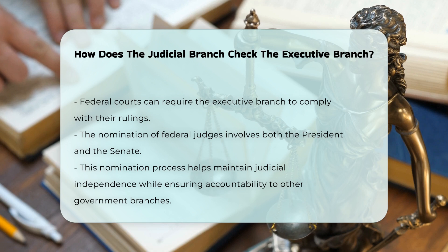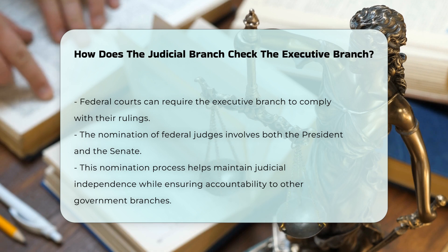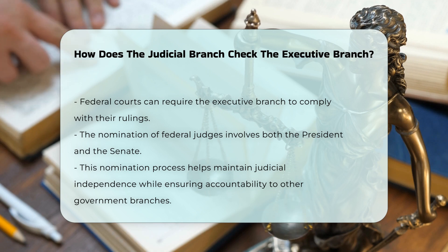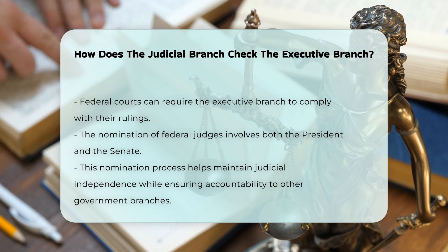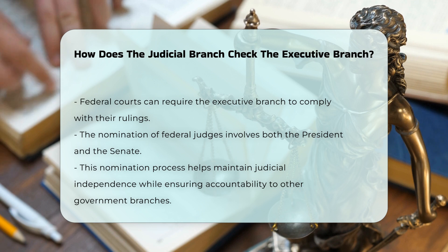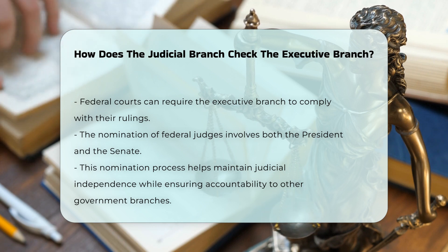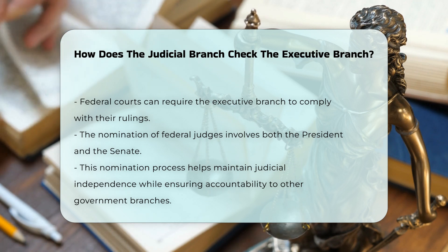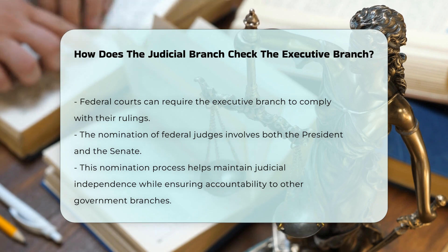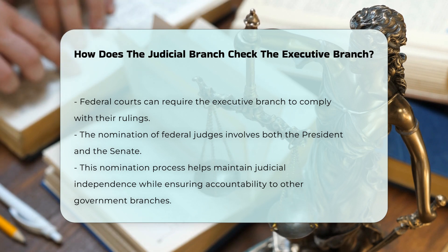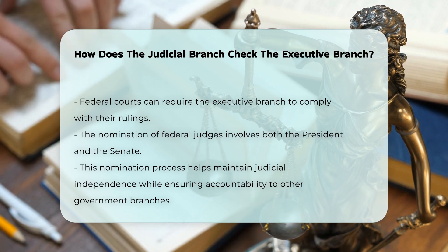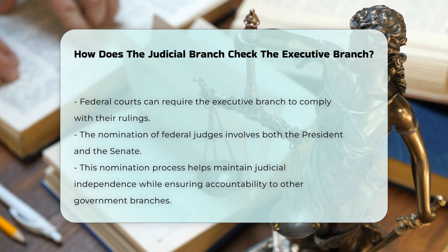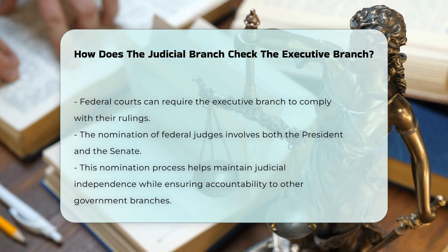The nomination and confirmation process for federal judges also involves an interplay between the judicial and executive branches. The president nominates judges, but the Senate must confirm these nominations. This process ensures that the judiciary remains independent while still being accountable to the other branches of government.